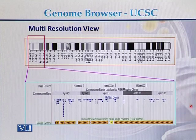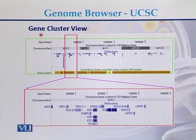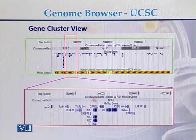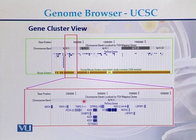Another view available at the UCSC genome browser is called the gene cluster view. Within a specific band, genes can be seen. Here we can see that band 4p16.3 has been magnified, and these are the genes present on this location — on this band of the chromosome. So these are all genes present at 4p16.3.